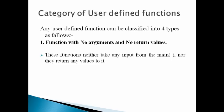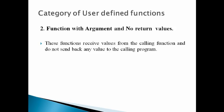Any user-defined function can be classified into four types. The first is a function with no arguments and no return values — these functions neither take any input from the main function nor return any values to it. The second category is a function with arguments and no return values — these functions receive values from the calling function but do not send back any value to the calling program.